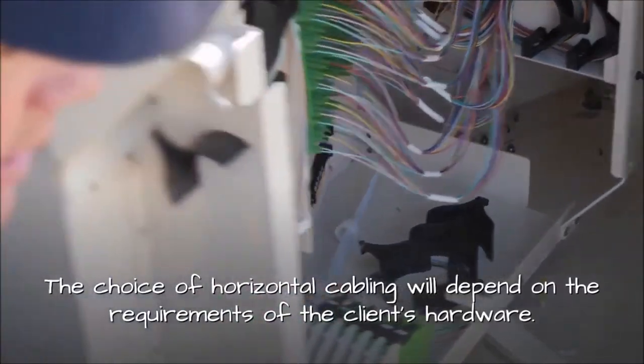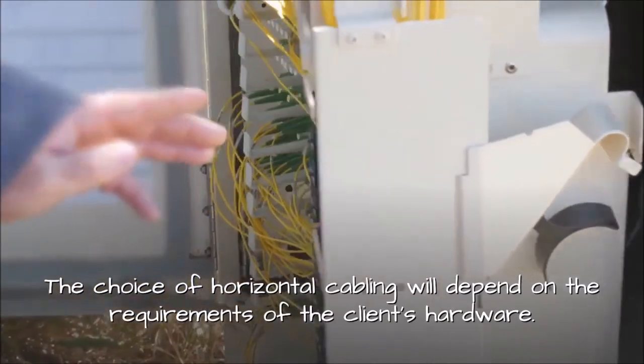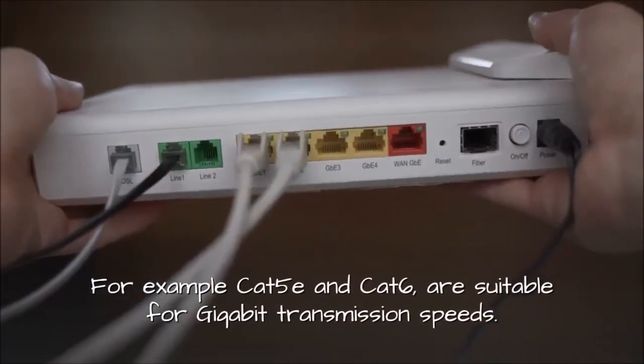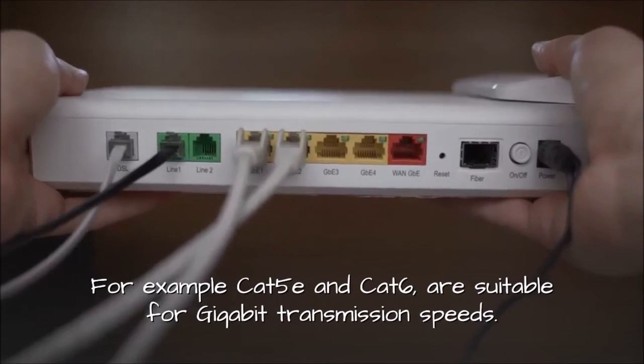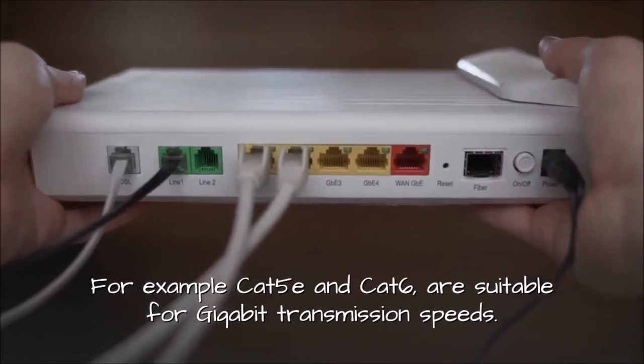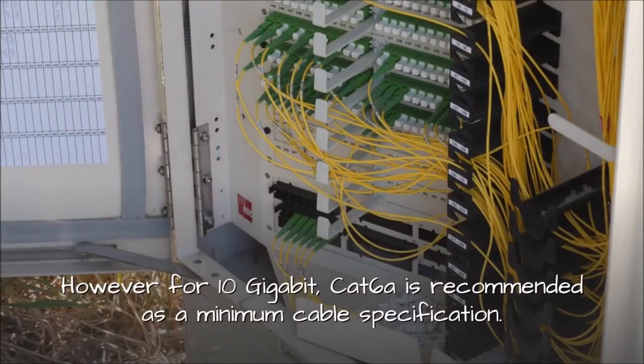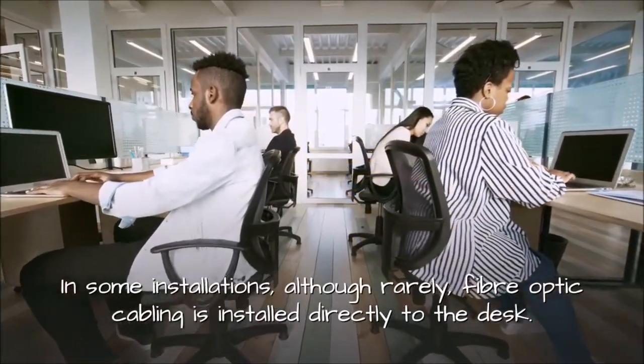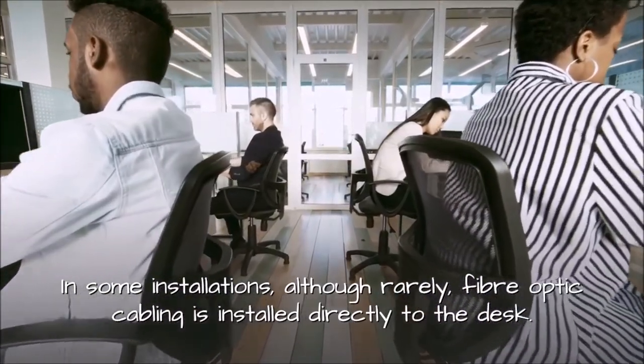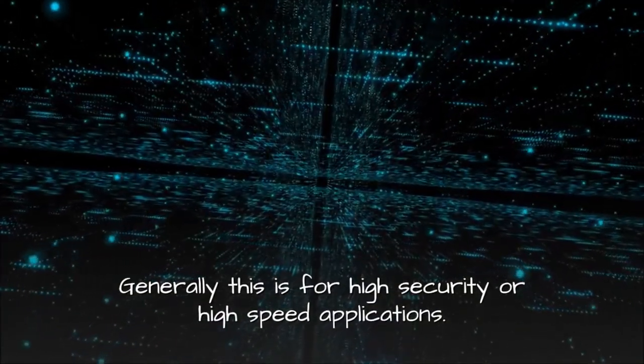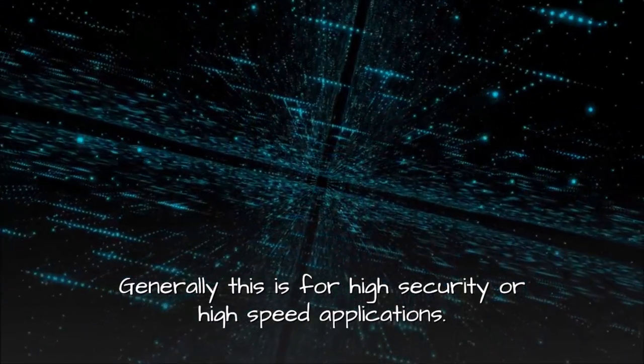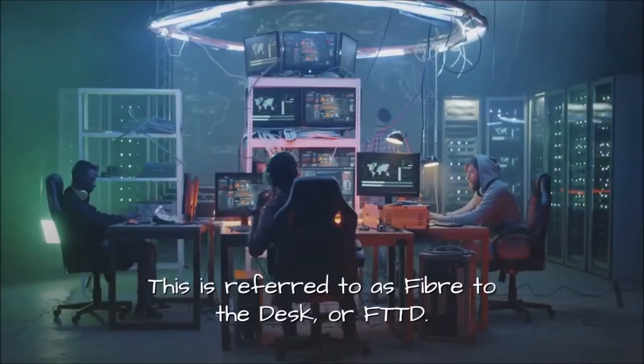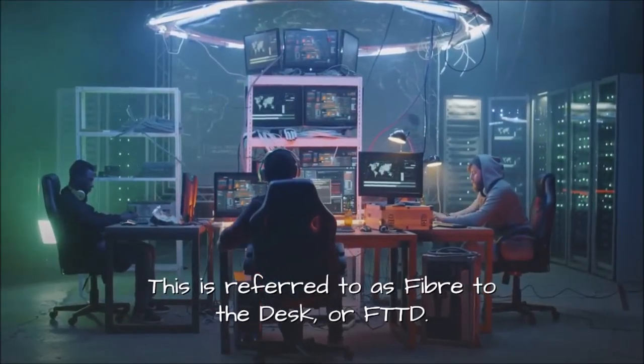The choice of horizontal cabling will depend on the requirements of the client's hardware. For example, CAT 5e and CAT 6 are suitable for gigabit transmission speeds. However, for 10 gigabit, CAT 6a is recommended as a minimum cable specification. In some installations, although rarely, fiber optic cabling is installed directly to the desk. Generally this is for high security or high speed applications. This is referred to as fiber to the desk, or FTTD.